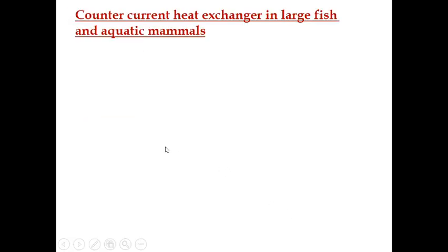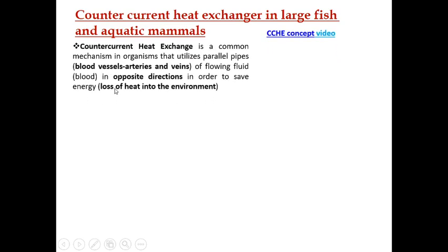Let us move to the next concept: counter current heat exchange in large fish and aquatic mammals. Counter current heat exchange is a common mechanism in organisms that utilizes parallel pipes — which are blood vessels, arteries and veins. Veins carry deoxygenated blood and arteries carry oxygenated blood. The fluid flows in opposite directions in order to save energy.